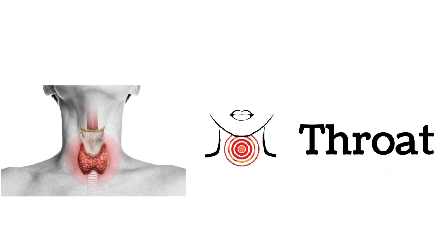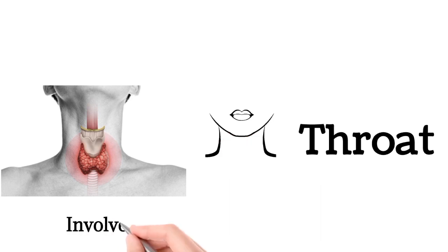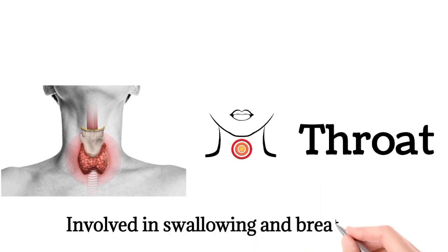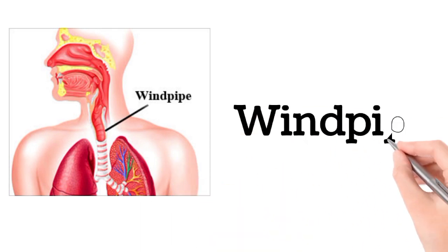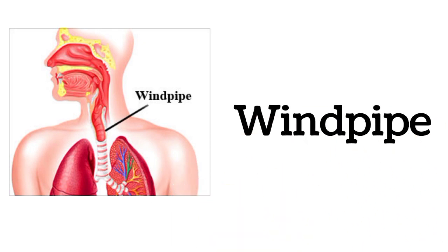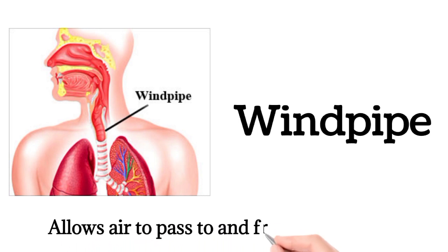Throat. The throat is involved in swallowing and breathing. Windpipe. The windpipe allows air to pass to and from the lungs.